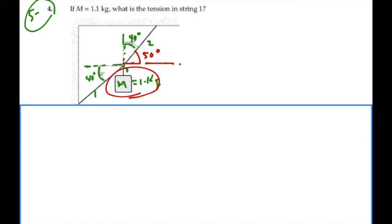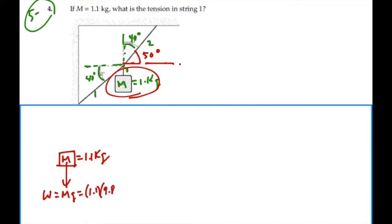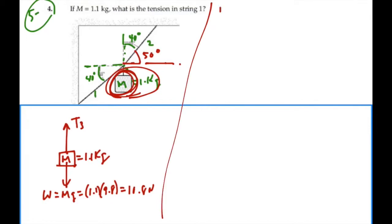As usual, we'll focus in on the mass M first and do a free body diagram of that mass. It's 1.1 kilograms, and we know it has weight equal to Mg — in this case 1.1 times 9.8, which equals 10.8 newtons. We also have force tension 3 going up, and those are the only two forces acting on this mass. So the summation of forces in the y direction equals 0: tension 3 minus weight equals 0, so tension 3 equals the weight, which is 10.8 newtons.